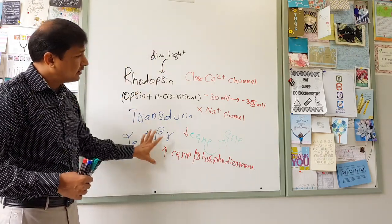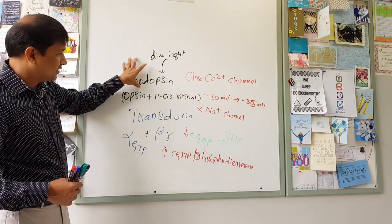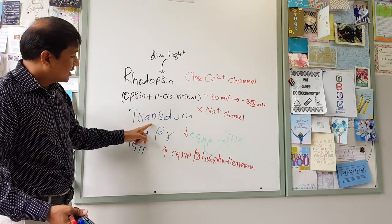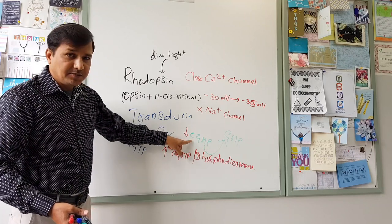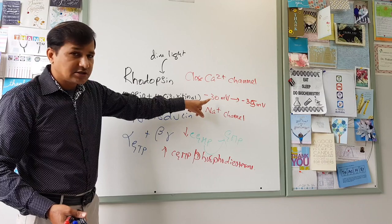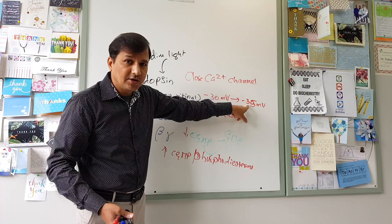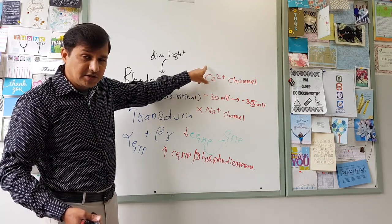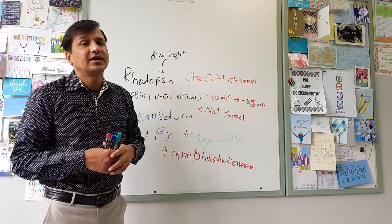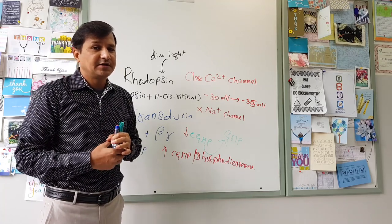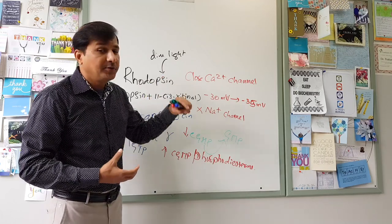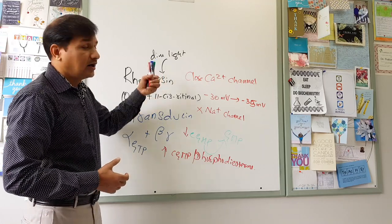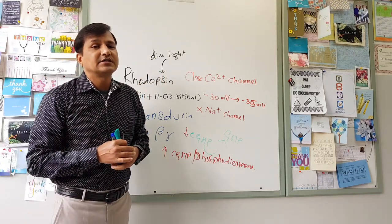To summarize: dim light causes photodegradation of rhodopsin — opsin and 11-cis retinaldehyde separate into opsin plus all-trans retinaldehyde. Then transducin is activated, cyclic GMP phosphodiesterase is activated, decreasing cyclic GMP concentration. The sodium channel closes, causing hyperpolarization from minus 30 millivolts to minus 35 millivolts, closing the calcium channel. Decreased calcium in rod cells reduces exocytosis of glutamate, the inhibitory neurotransmitter. In the absence of glutamate, rod cells communicate with bipolar cells, and the signal moves from the retina into the optic cortex. This process takes time — which is referred to as dark adaptation time.